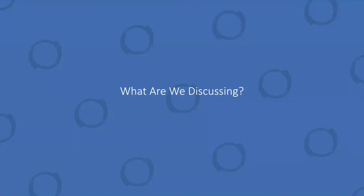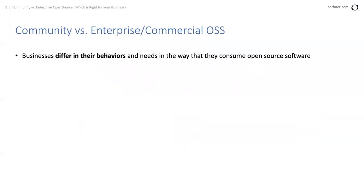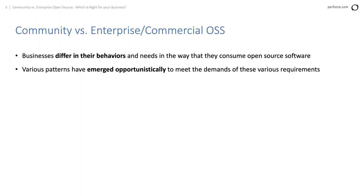That's the closest thing to a sales pitch you'll hear from me. Businesses really do differ in the way they consume open source because of specific needs — security, privacy, high-availability uptime requirements. Because of that, businesses change the way they consume open source, and we've seen opportunistically emerging patterns in the industry that have risen to meet some of these demands.